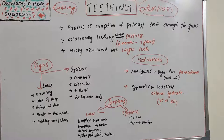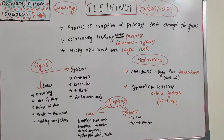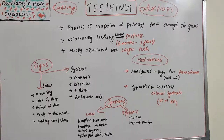Teething usually starts around four to ten months, when the first decidual central incisor erupts. Some babies may be early at four months, some average at six months, and some late at ten months. The eruption sequence is: first central incisors, then lateral incisors, canines, first molars, and second molars.